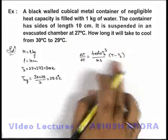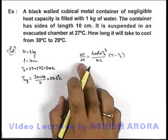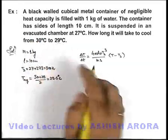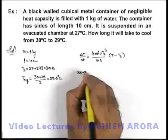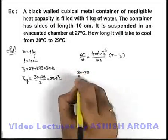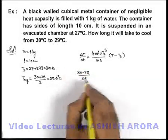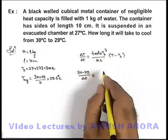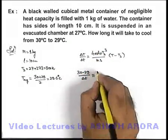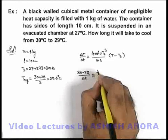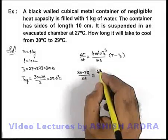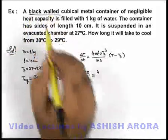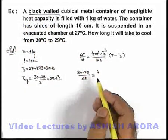For the average form, we can write ΔT/Δt. As the body is cooling from 30 to 29 degrees centigrade, it can be written as 30 minus 29 divided by Δt — where Δt is the duration in which it cools — is equal to 4 multiplied by emissivity, which we take as 1 since it is a black-walled container and we can treat it like a black body.